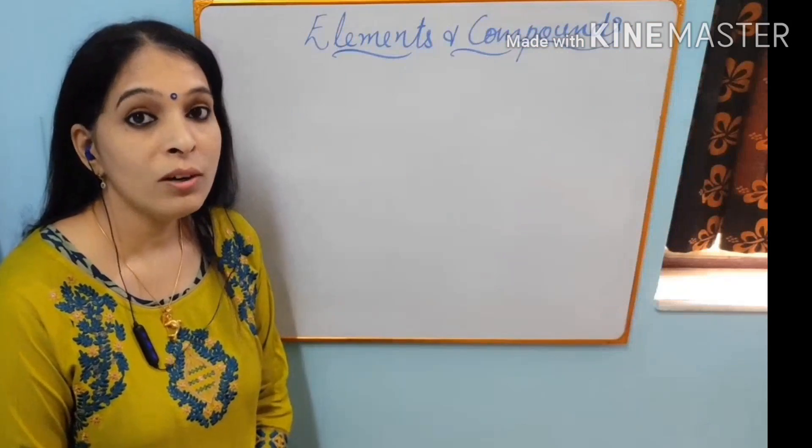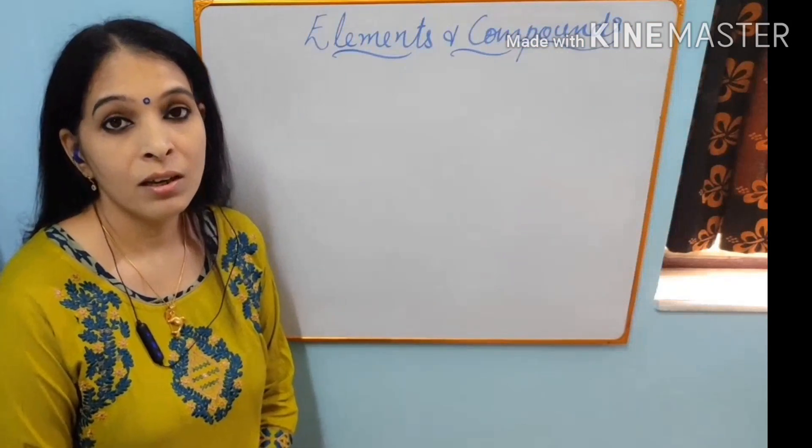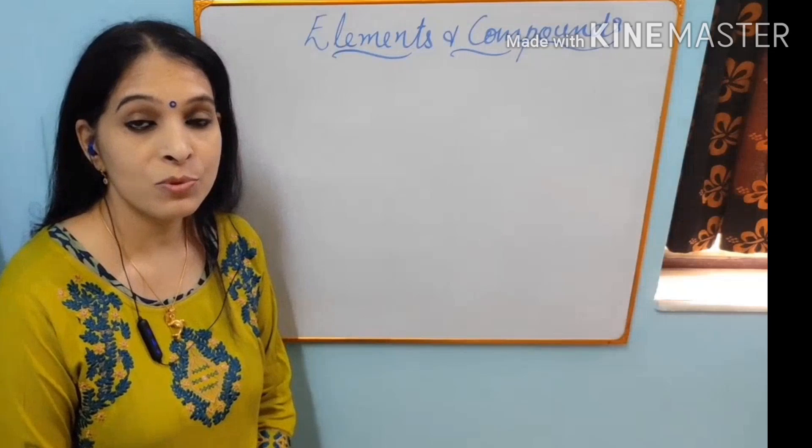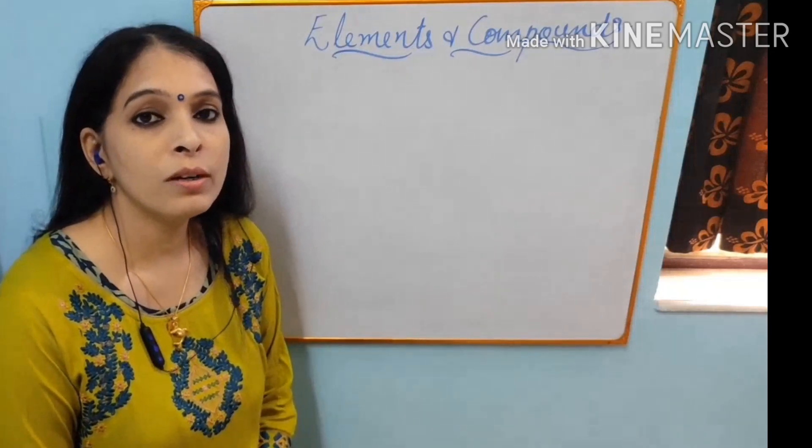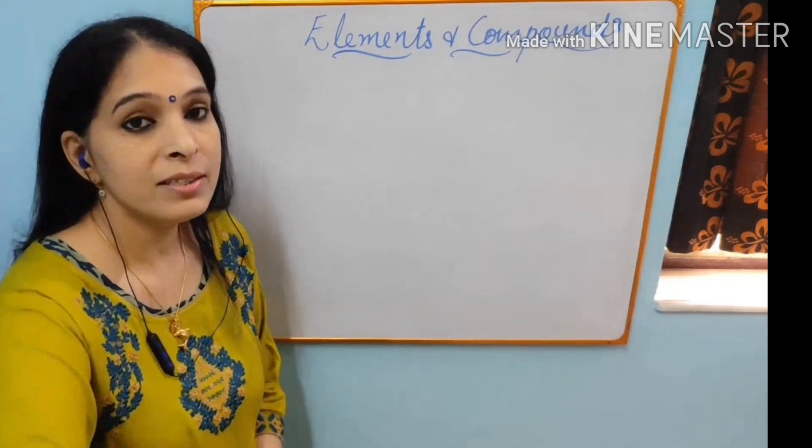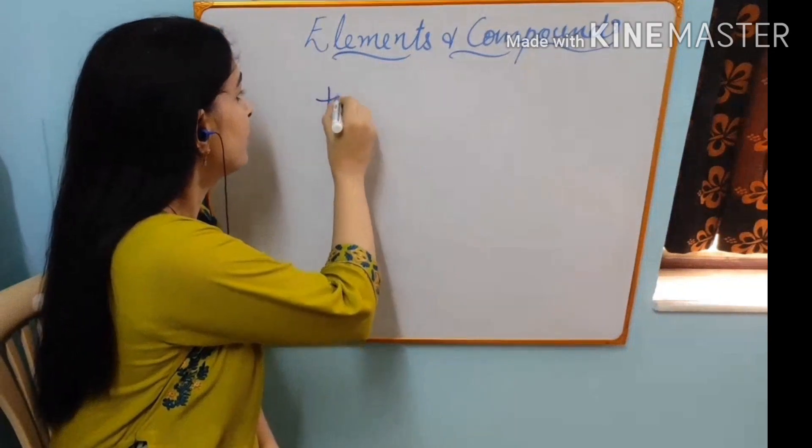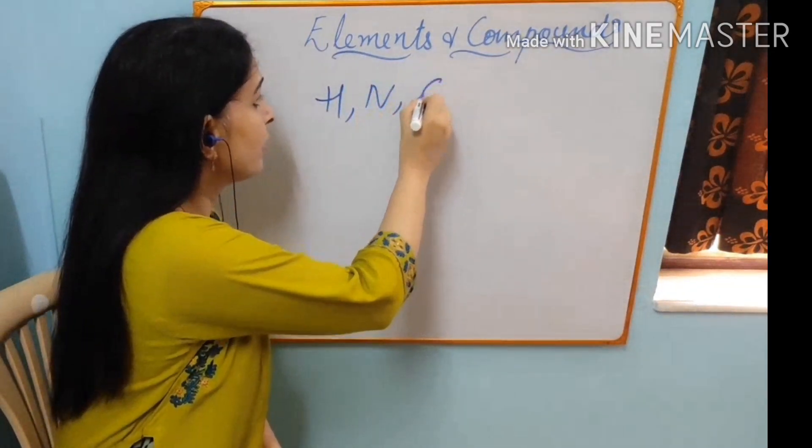Let us see quickly what are elements and compounds. An element is a pure substance which is made up of only one type of atoms. One example is hydrogen, another one nitrogen, carbon.